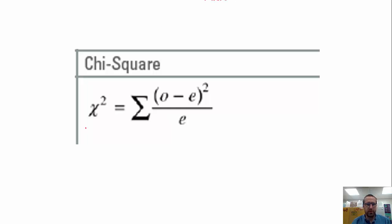So this is not an X, it's actually the Greek letter chi. So it's the chi-square test, and it is literally the sum, sigma, of observed minus expected values squared divided by the expected value.